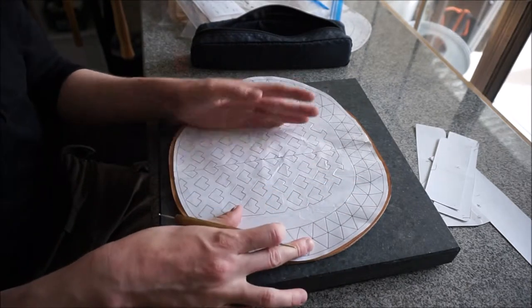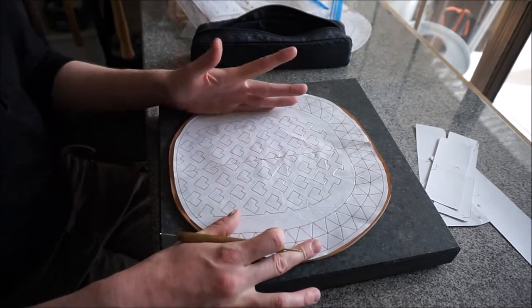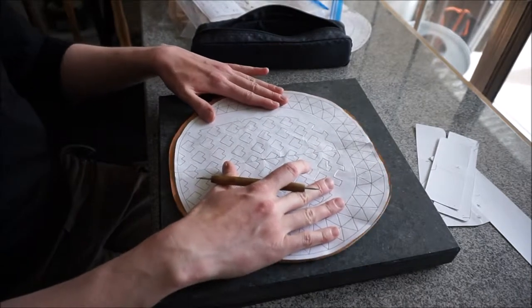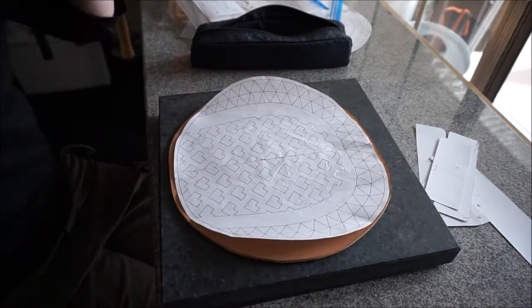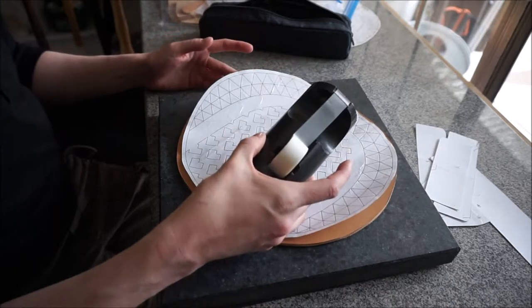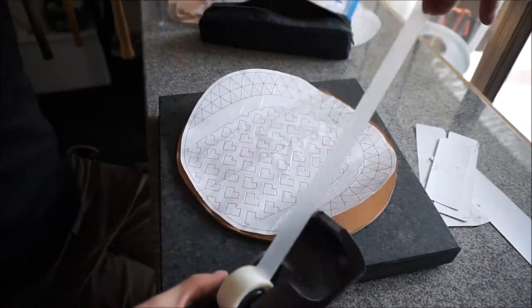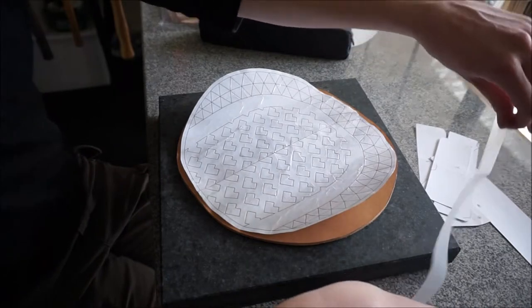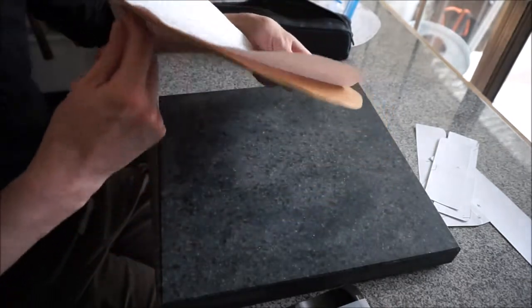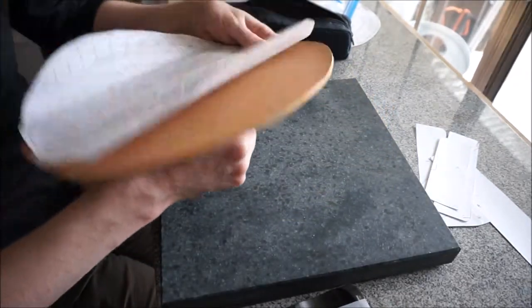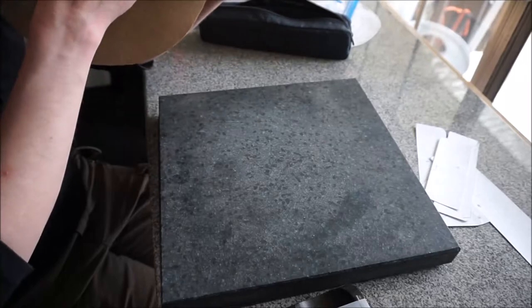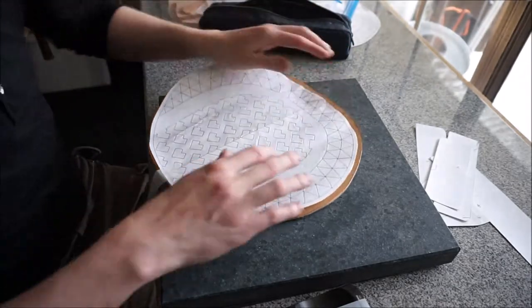Usually I would just trace this thing out without taping it down, but for the purposes of this video I am going to tape it down just to show how that works. I'm using ordinary scotch tape for that, but the thing about taping stuff to wet leather is that tape does not stick to wet leather at all. You have to stick the tape to itself, so I'm gonna wrap it all the way around.